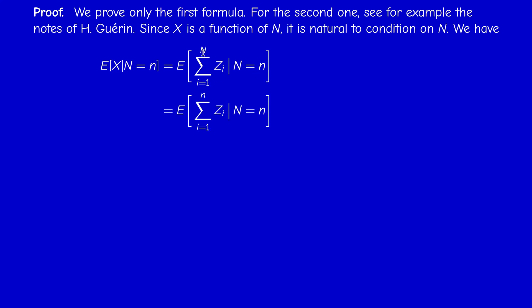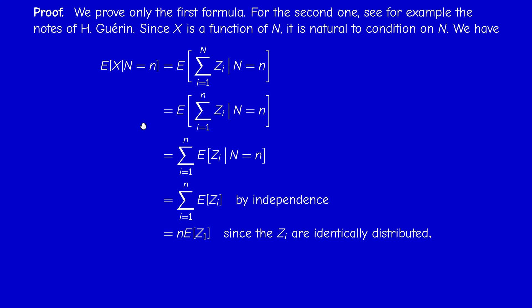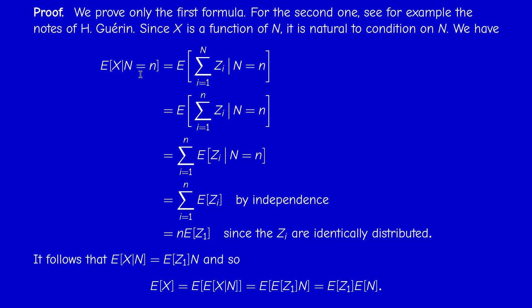We plug in X and replace the sum from i=1 to N. Since we condition on the event that N has the fixed value n, we replace N by n, so the sum becomes the sum from i=1 to n. Conditional expectations are linear, so the expectation of the sum is the sum of the expectations. Using the assumption that Z_i is independent of N, the expected value of Z_i given N=n is simply E[Z_i]. Since the Z_i are identically distributed, this is E[Z₁] repeated n times, giving n·E[Z₁]. By properties of conditional expectation, E[X | N] = E[Z₁]·N, a random variable.